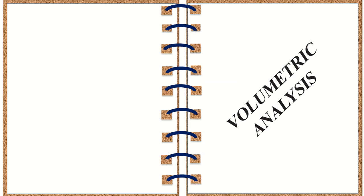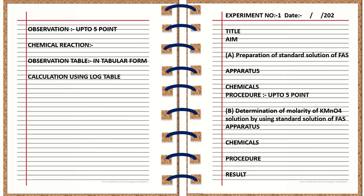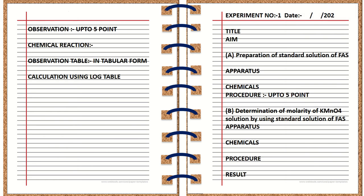The printed page is already given showing how to write the volumetric analysis. On the right-hand side, you should write the experiment number and date. After that, write the title, then Part A — preparation of standard solution of ferrous ammonium sulfate — followed by apparatus, chemicals, and the procedure for Part A. Then Part B — determination of molarity of KMnO4 solution using the standard solution of ferrous ammonium sulfate — followed by apparatus, chemicals, procedure, and finally the result. All these things should appear on the right-hand page of the journal.